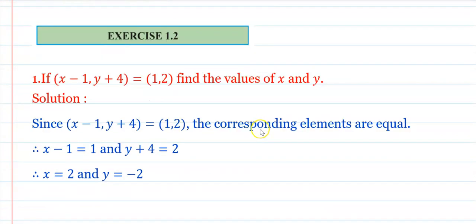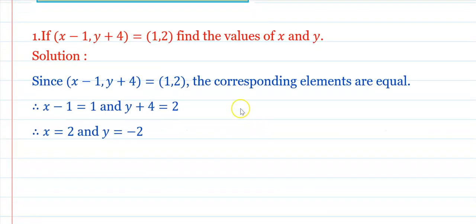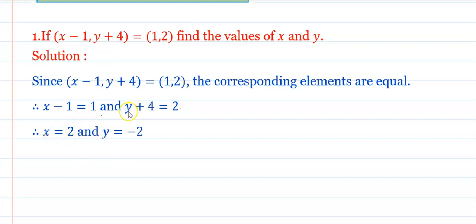Exercise 1.2 begins. Question 1(i): If (x−1, y+4) = (1, 2), find x and y. x−1 = 1, so x = 2. y+4 = 2, so y = 2−4 = −2. Hence x = 2 and y = −2.